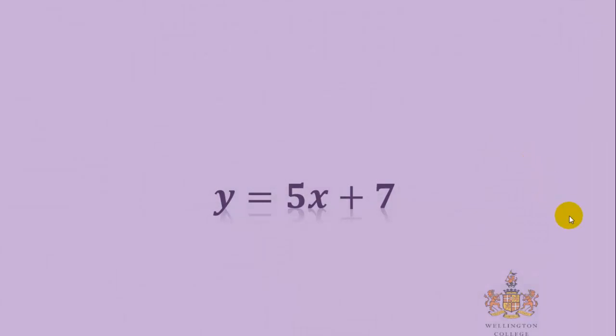First of all, we're going to look at this equation here, y equals 5x plus 7. And it's made up of different parts. And these are the names of them.